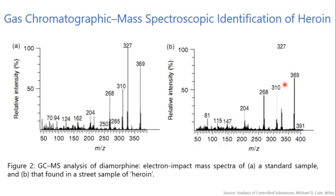Examples of mass spectra of diamorphine from the standard mixture and from the street sample of heroin are shown in Figure 2. In Figure A there is a standard sample derivatized with NOBSA, and the second is the actual street sample of heroin. The values 369 and 327 are the two different characteristic features indicating the presence of heroin in the given sample.